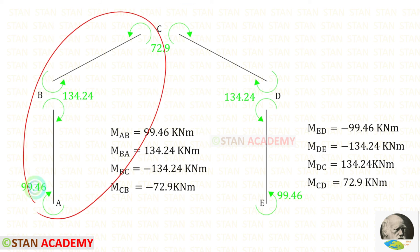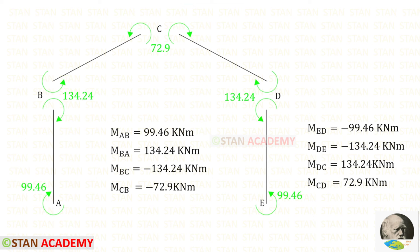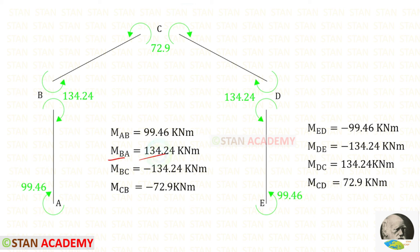On the left side, we have calculated the moments. Now let us find the moments on the right side by changing the signs. Since M_AB has a positive value — meaning it acts clockwise — M_ED must act anticlockwise and is therefore negative. Similarly, M_BA is positive and clockwise, so M_DE is anticlockwise and negative. In the same way, we can find M_DC and M_CD.